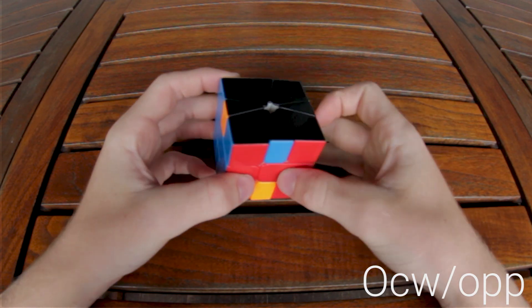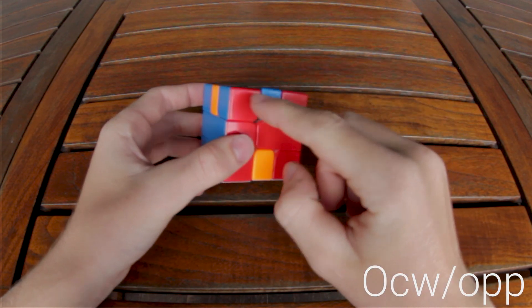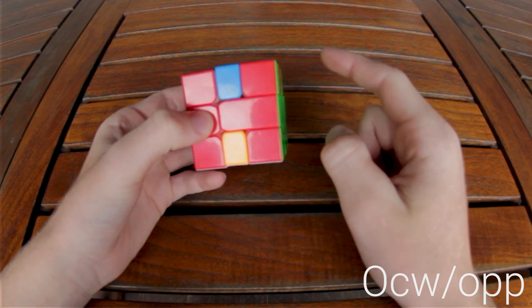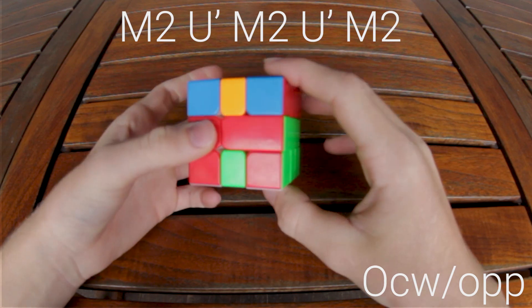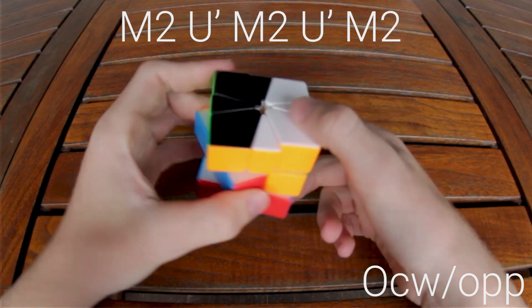Same thing for the clockwise one. Check where the blue is going. It's going to the left, so then your U move will be going U prime. So M2, U prime, M2, U prime, M2, AUF.